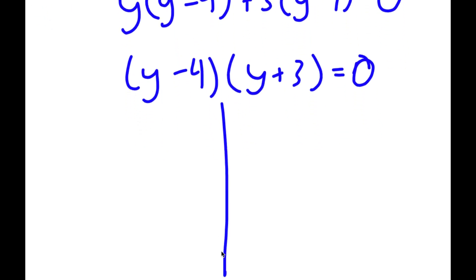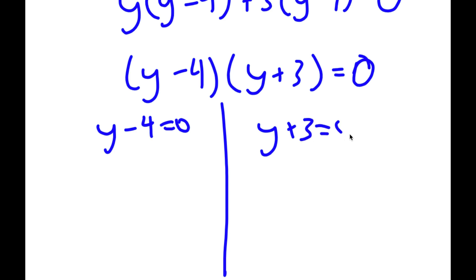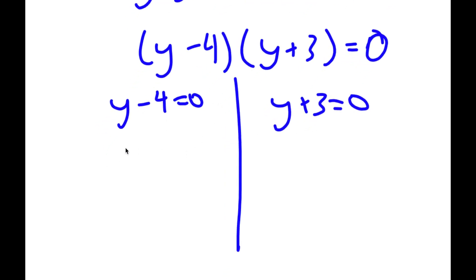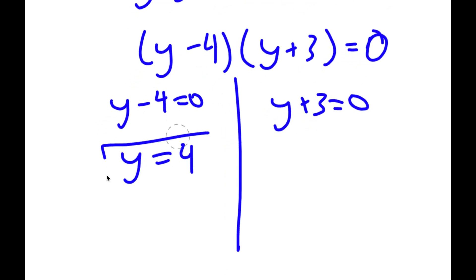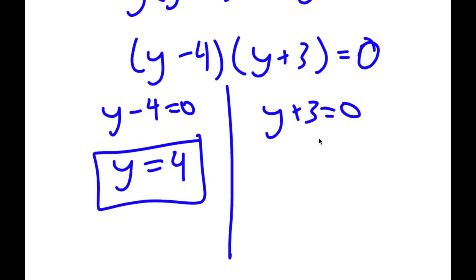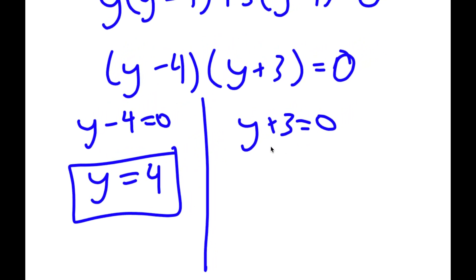Factoring out y minus 4, I get y minus 4 times y plus 3 is equal to 0. This gives me two equations: y minus 4 is equal to 0 and y plus 3 is equal to 0. So for y minus 4 equals 0, y is equal to 4. And for y plus 3 equals 0, y is equal to negative 3.